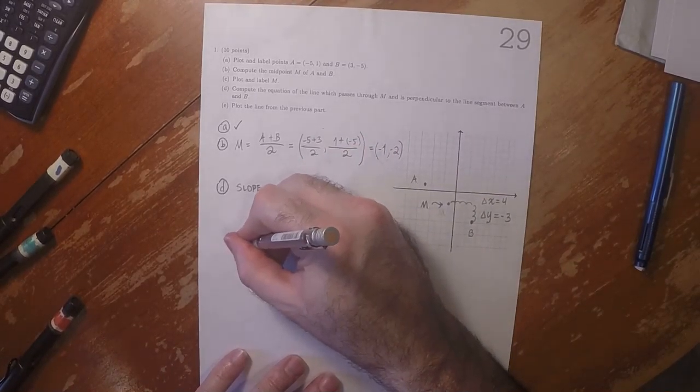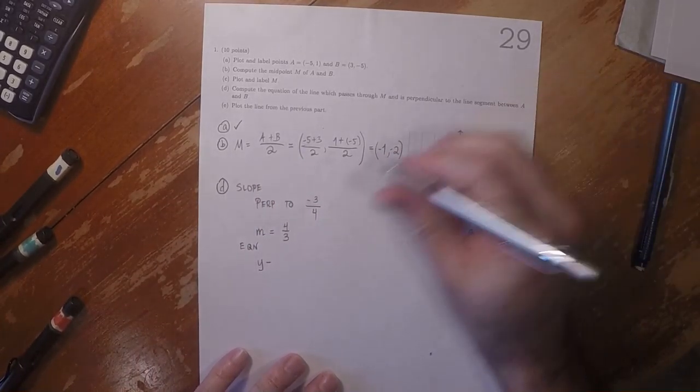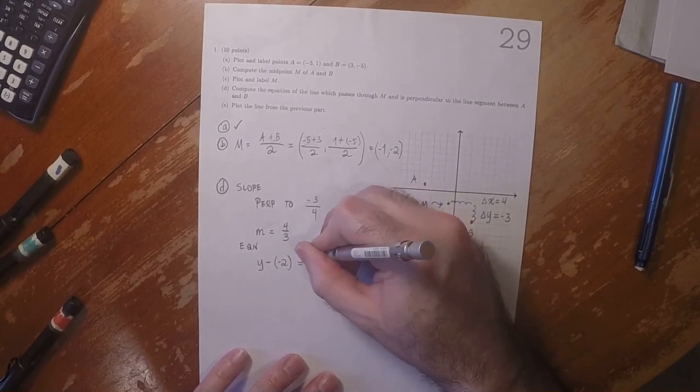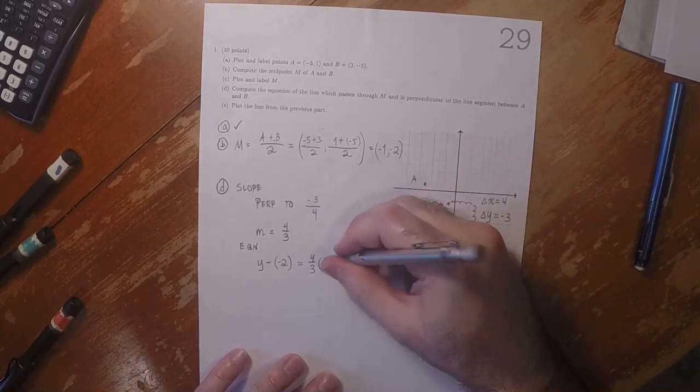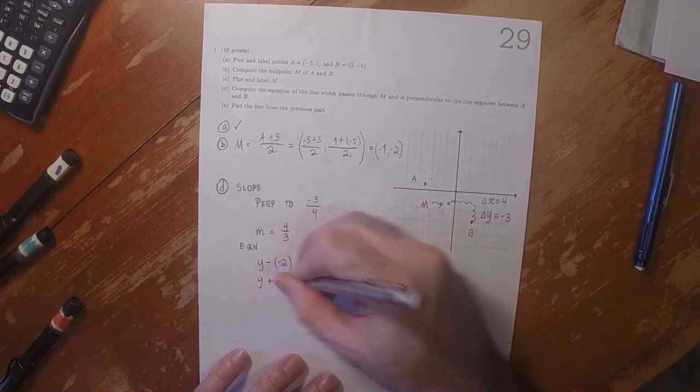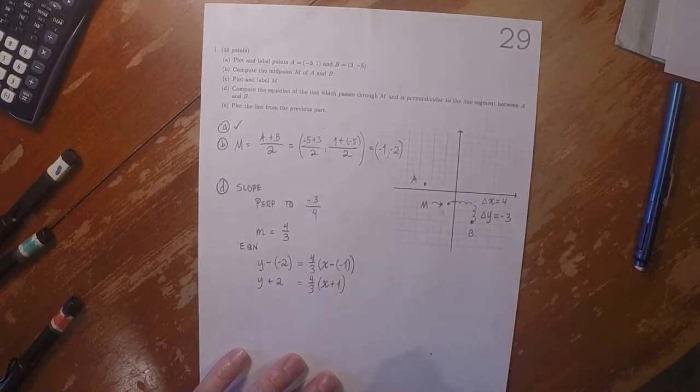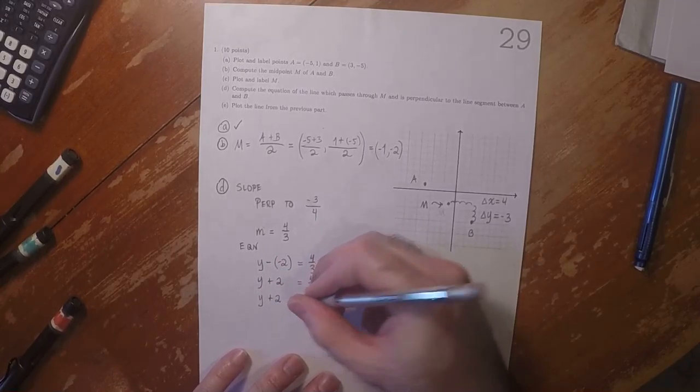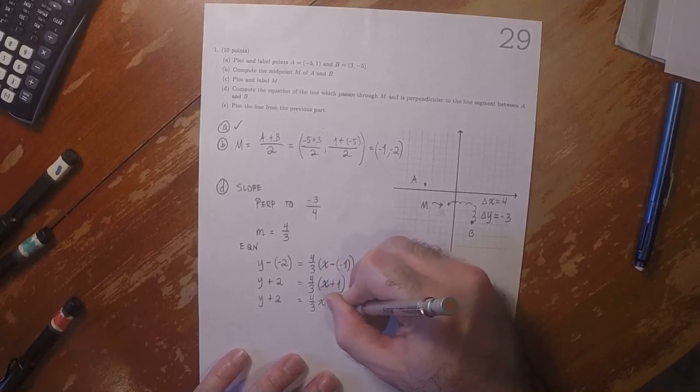And so the equation Y minus Y1, so that would be Y minus negative 2 is 4 thirds times X minus negative 1. So Y plus 2 is 4 thirds X plus 1. So Y plus 2 is 4 thirds X plus 4 thirds.